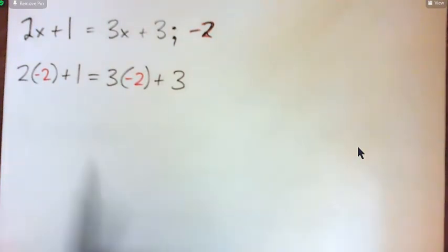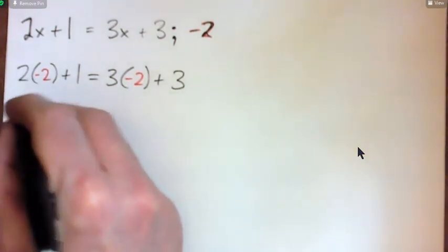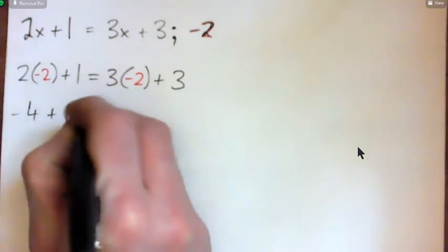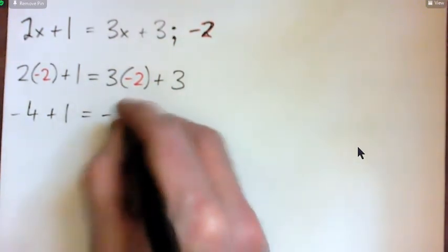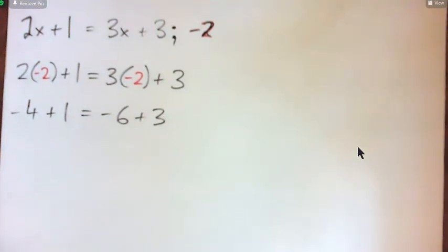2 times negative 2, we get negative 4 plus 1. And here, 3 times negative 2, negative 6 plus 3. And we'll just simplify each side until we get to an actual number.